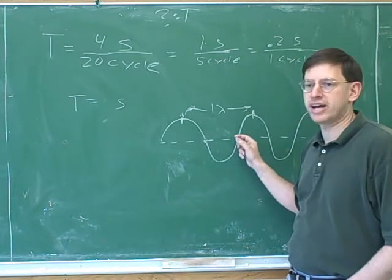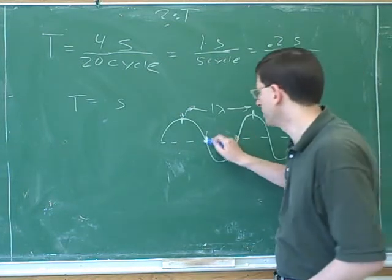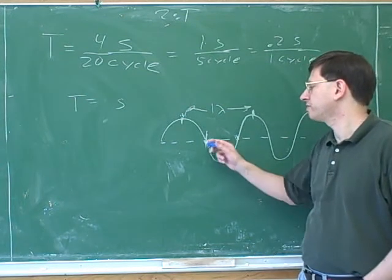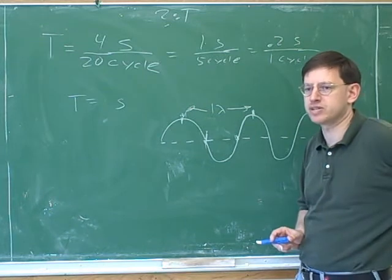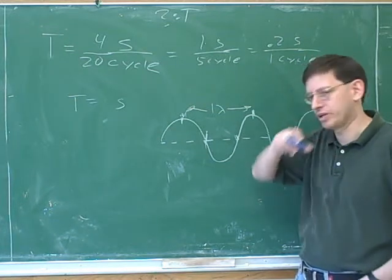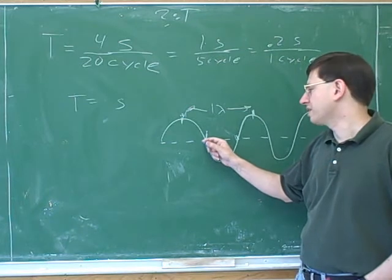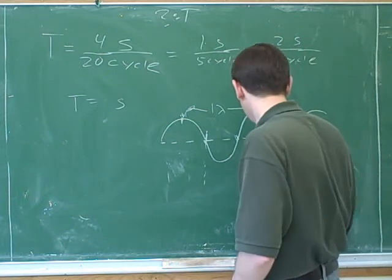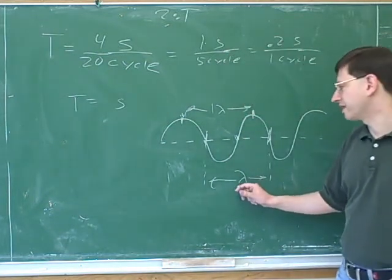So from one crest to another is always one wavelength. But neighboring equilibriums are not equivalent, because one equilibrium is downward sloping and one equilibrium is upward sloping. So a wavelength is supposed to be the shortest distance between equivalent points on the wave. So the next equivalent point here is the next equilibrium where you're upward sloping. Okay.